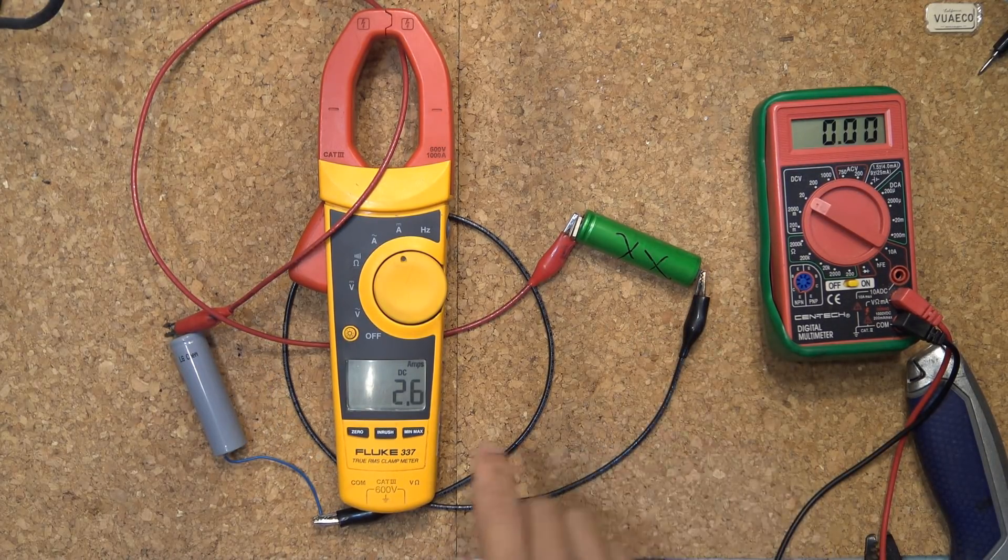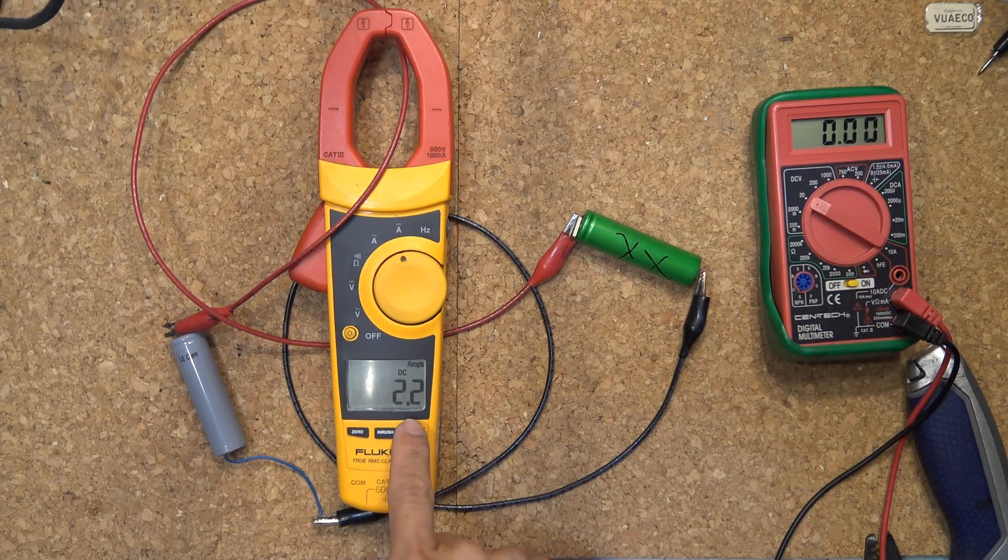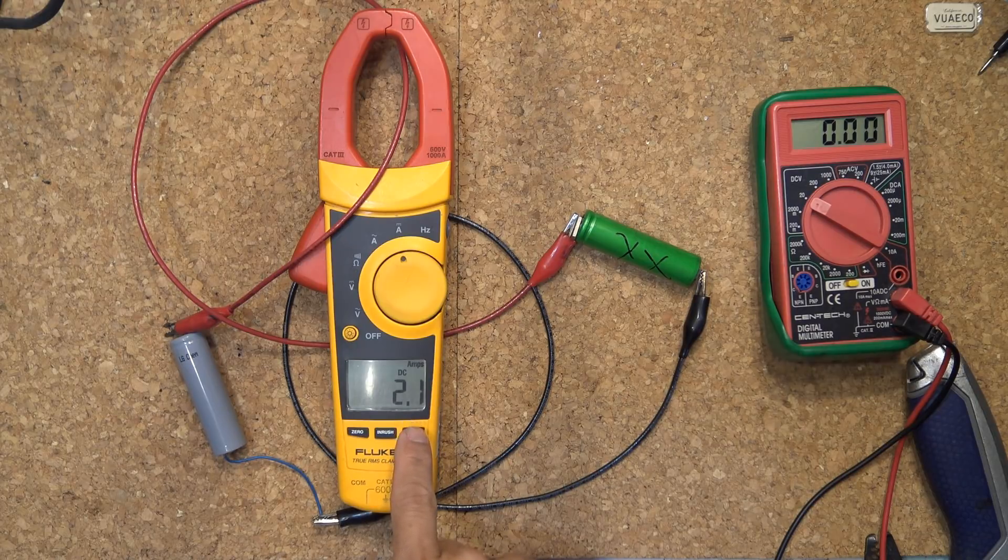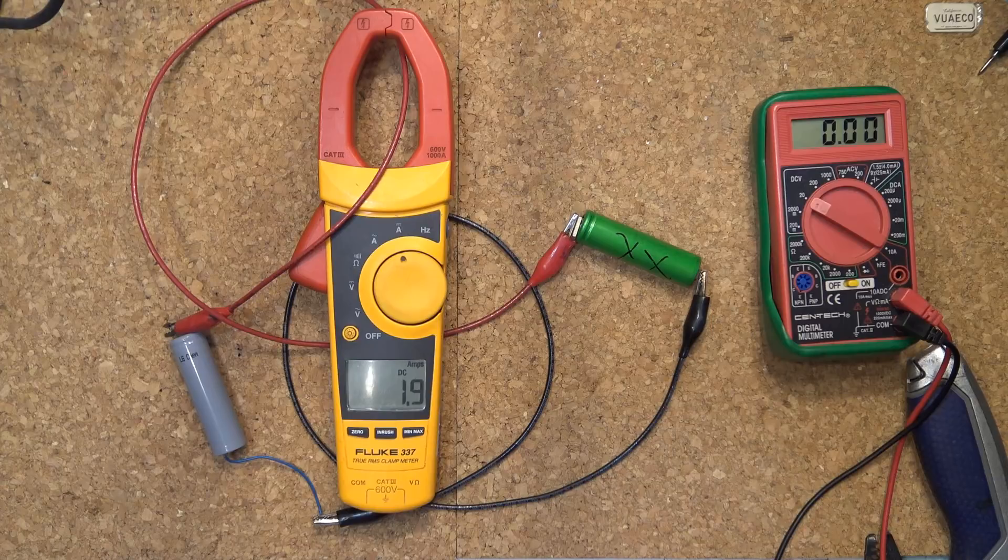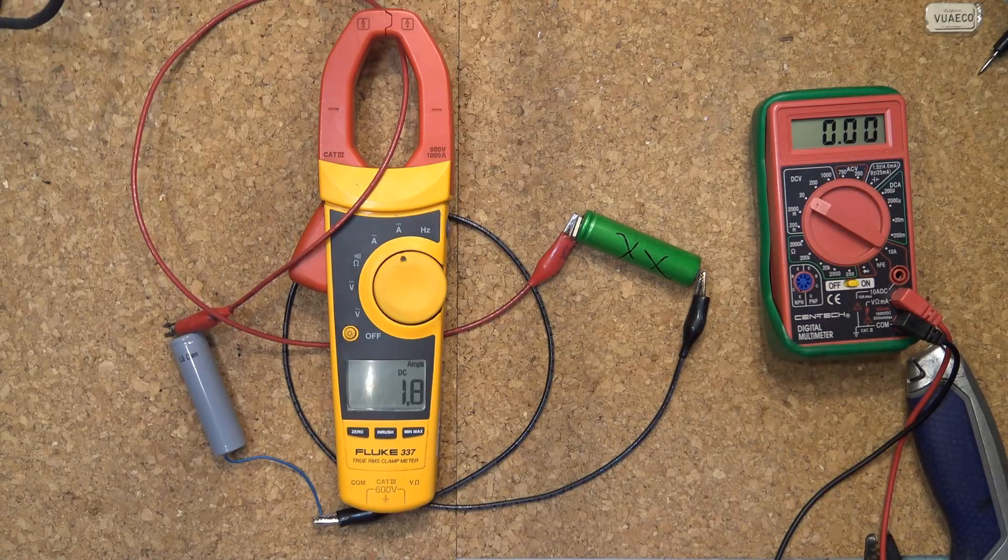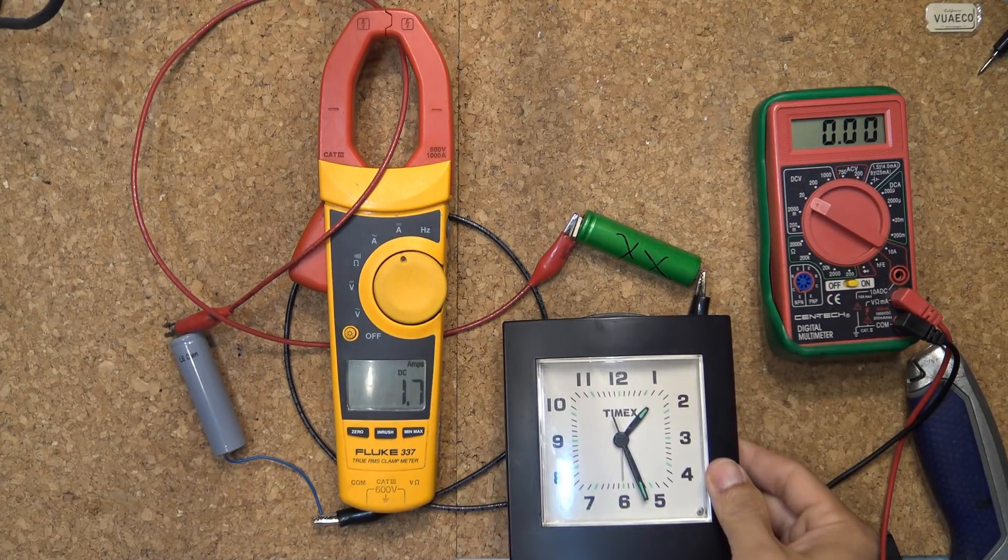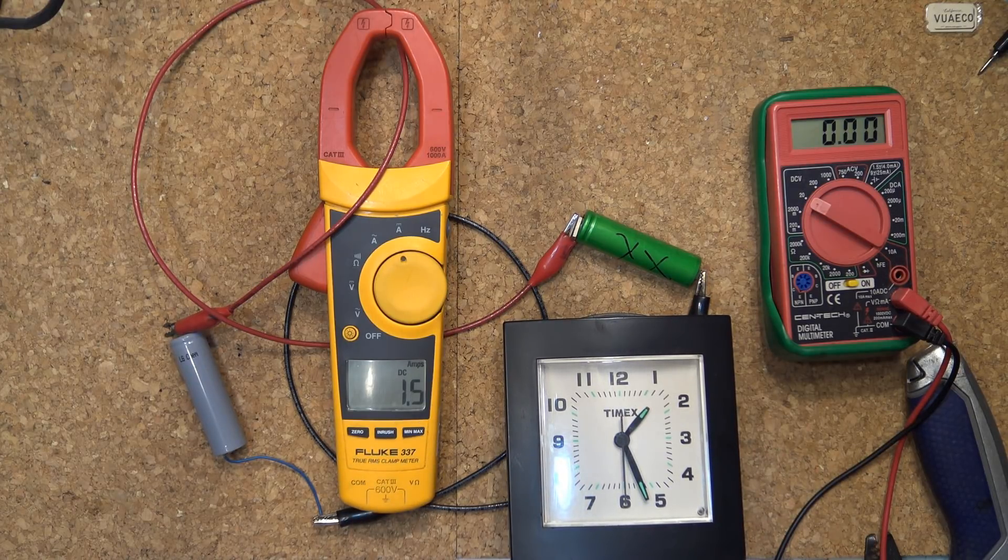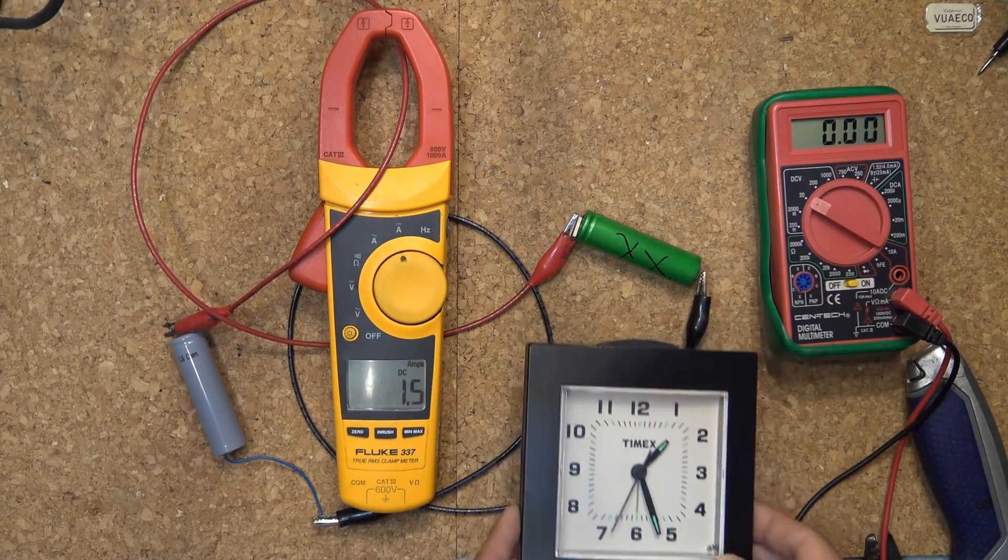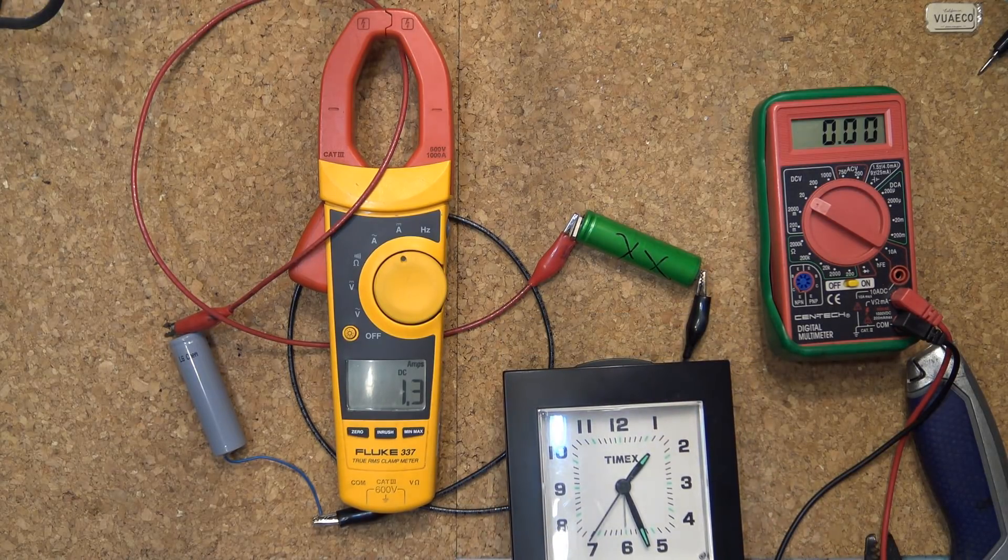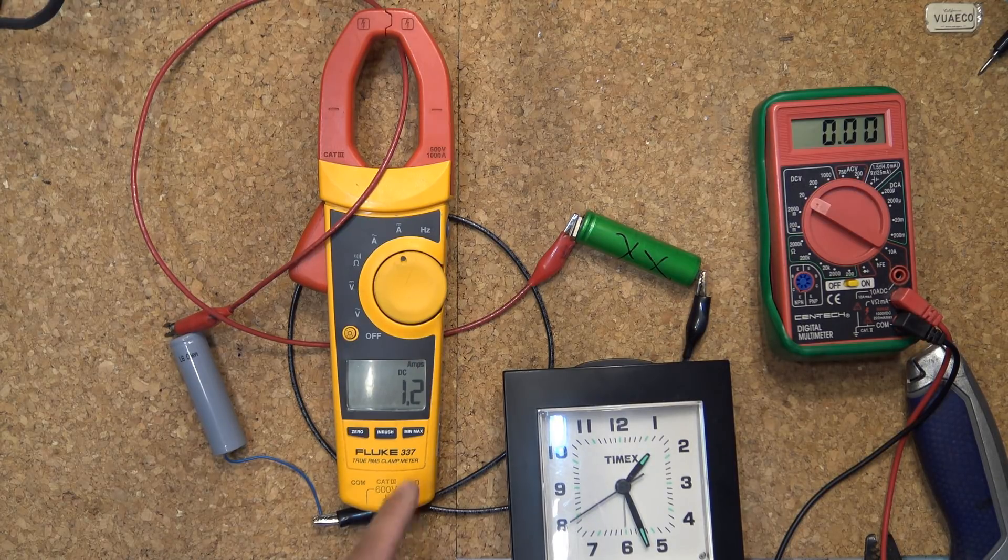You see that it started out at about 3.6 amps, and then rapidly reduced down to now 2 amps. It has been only about 10 seconds. I'll put my clock down here too. You can see the time, about 15 seconds in. It goes down to 1.6, 1.5 amps now. 30 seconds in, 1.2 amps.